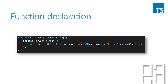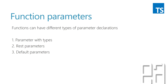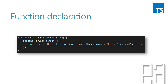This is the very simple code written inside the function. The function declaration is: you have `function` followed by the name, then the parameters. You can have any number of parameters. The function parameters will have different declaration styles — parameters with a type that we saw, something called rest parameters, and something called default parameters.